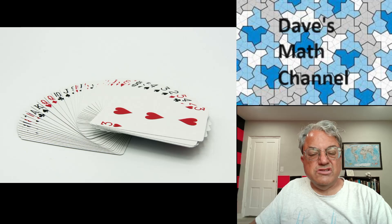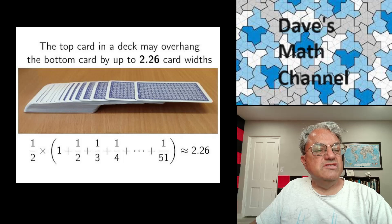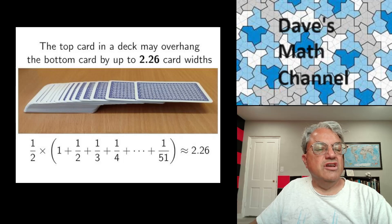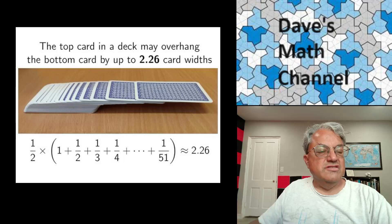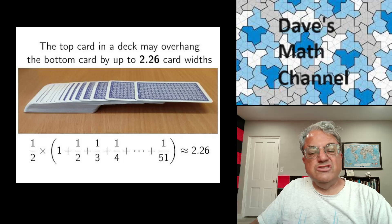There is a way to answer that question. It's called logarithmic stacking. And it turns out the answer is about 2.26 card lengths. So the formula is a half times the sum 1 plus 1/2 plus 1/3 up to 1/51. And that turns out to be approximately 2.26. And how do we get that formula?